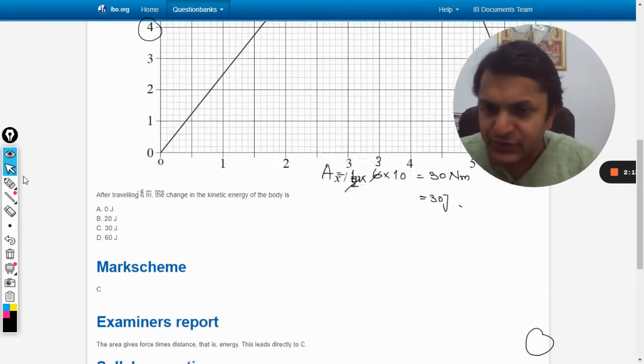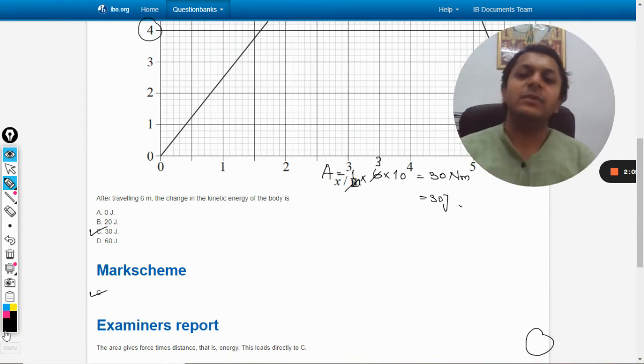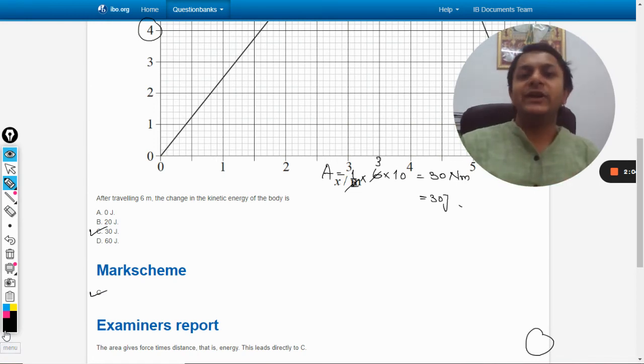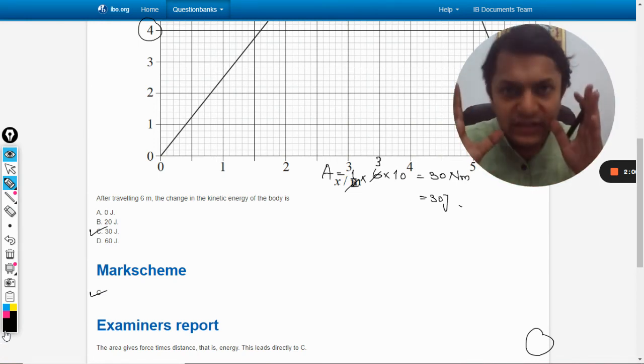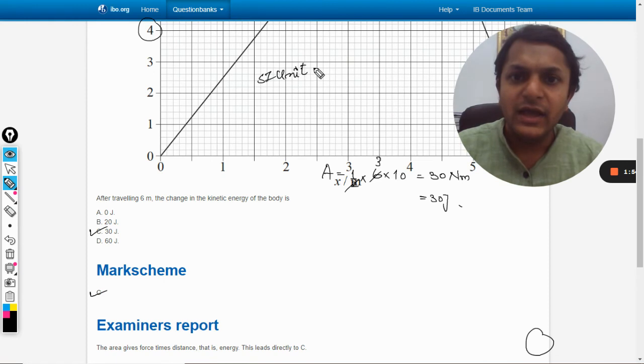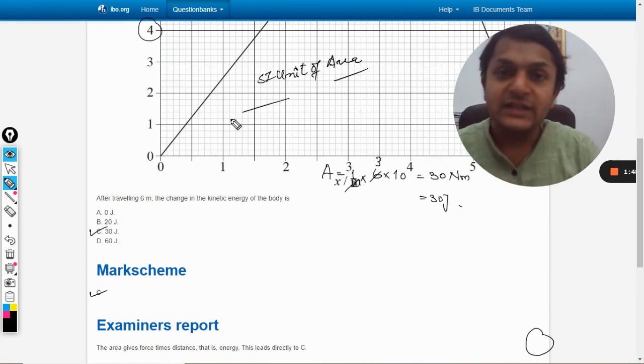And let us see the option, and there is the mark scheme also. This is 30 joule and mark scheme says that yes, the answer is 30. So this is how we do it. Whenever there is a graph, always try to consider the area under the curve, try to find the SI unit of the area as a unit of whatever the area that you are finding. And from there you will have this clue that yes, I need to find the area for this. Okay, so with this, all the best, bye.